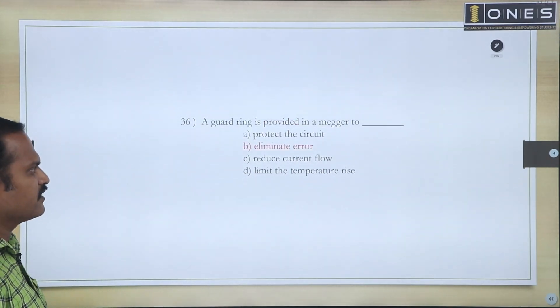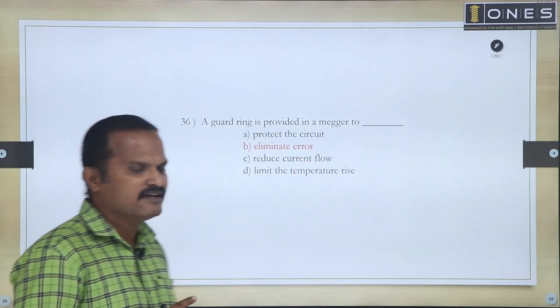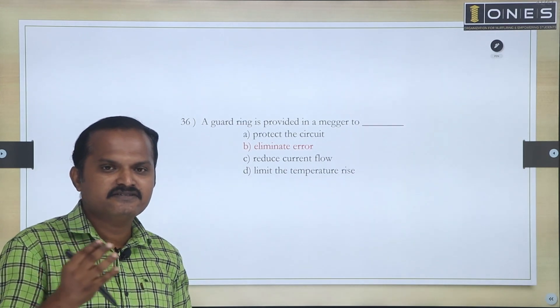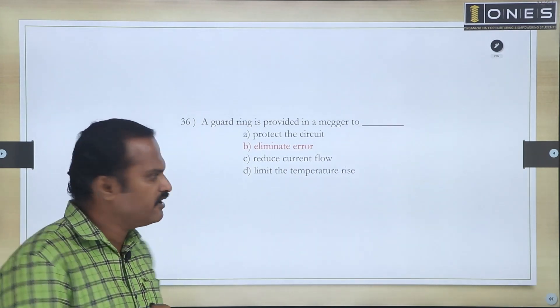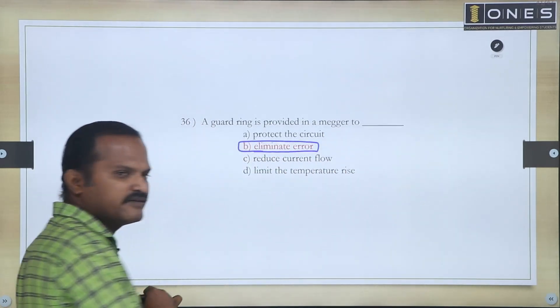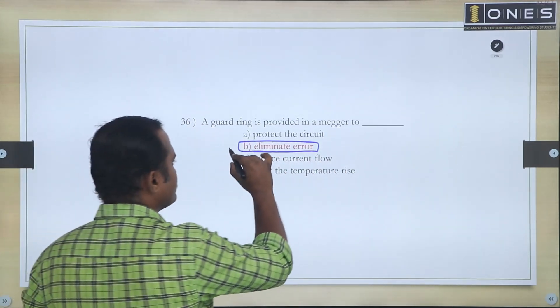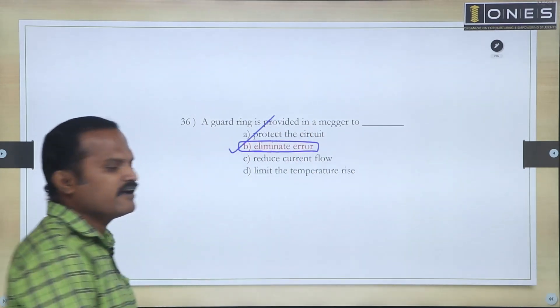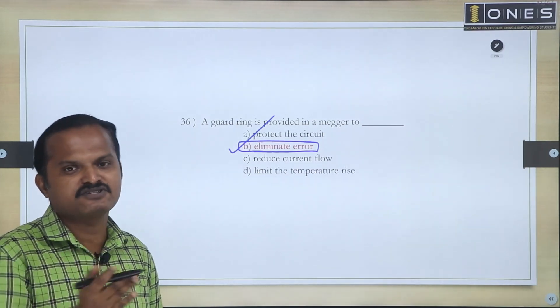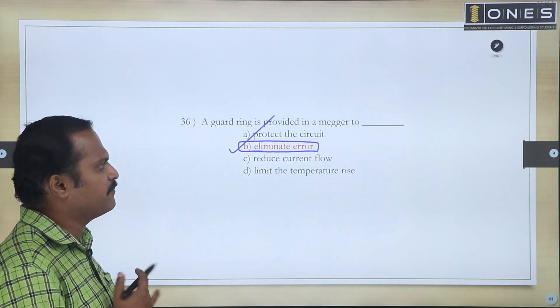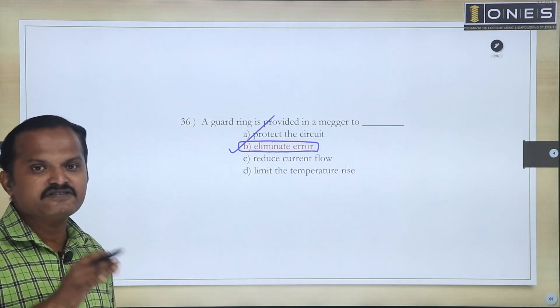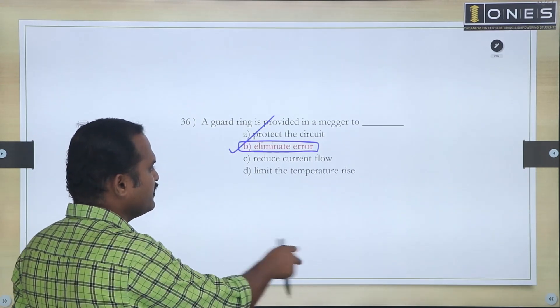Next: The guard ring. The guard ring's main purpose is to eliminate leakage. It will suppress leakage current components to a maximum. It's for eliminating error, minimizing your error while measuring. So the guarding purpose in Megger is to eliminate and suppress your leakage current.